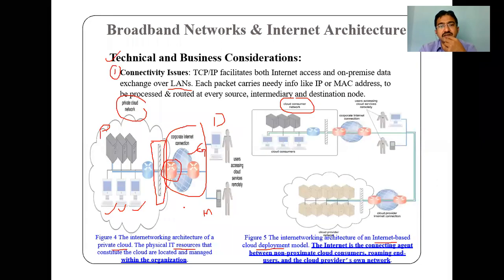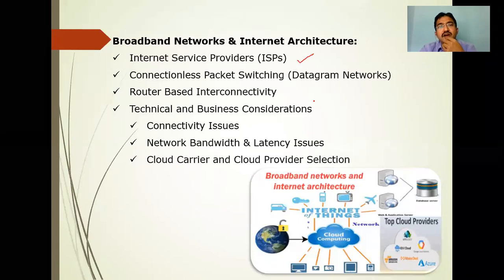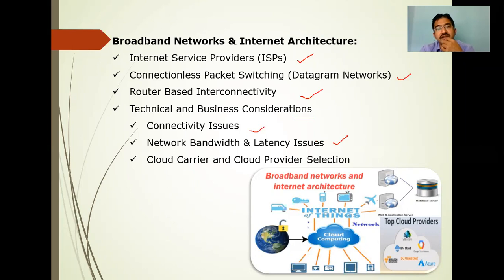So that's about the first topic. What we discussed today is broadband networks and internet architecture. We have seen ISPs, the ways to do broadband networking: connectionless packet switching and route-based connectivity — those are the three ways. We also saw some technical and business considerations: connectivity issues, network bandwidth and latency issues, and cloud carrier and cloud provider selections. This is about the first topic of the entire unit.